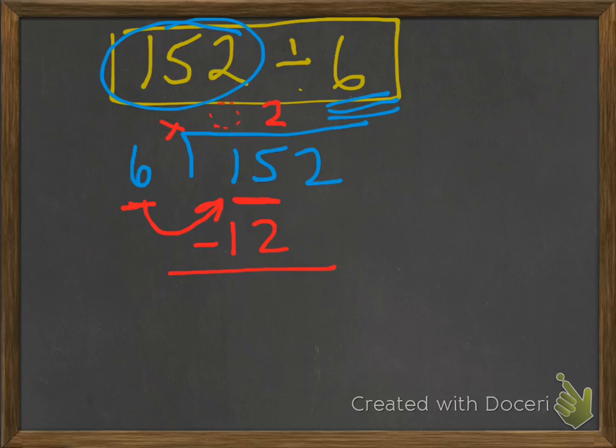And so we subtract. 5 minus 2 is 3. 1 minus 1 is 0. And next we're going to go ahead and bring down the 2.